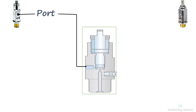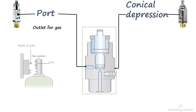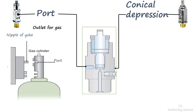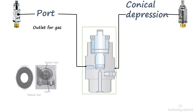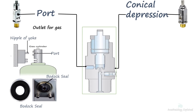The port and the conical depression lie on opposite surfaces of each other. The port serves as an outlet for gas and fits into the nipple of the hanger yoke in the anesthesia machine. It is covered by a seal or washer called a Bodoc seal to achieve a tight fit with the nipple.